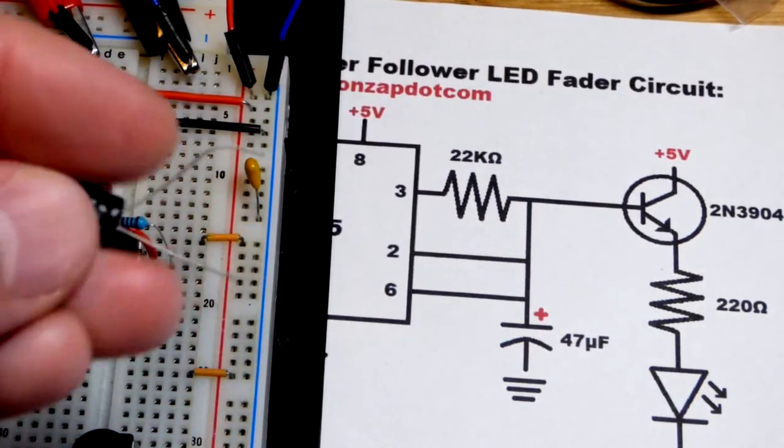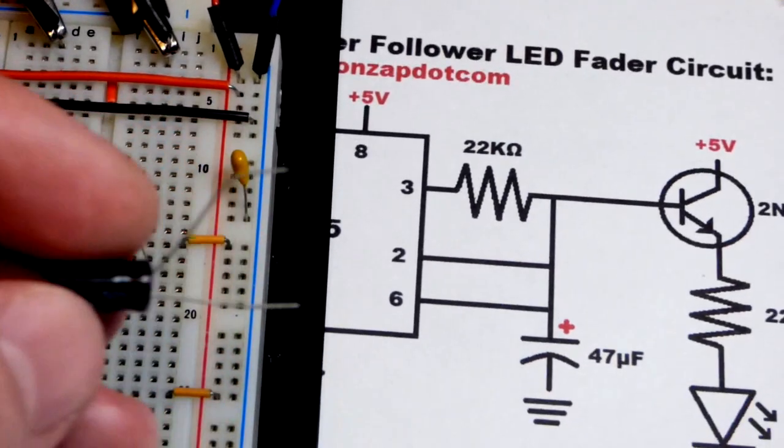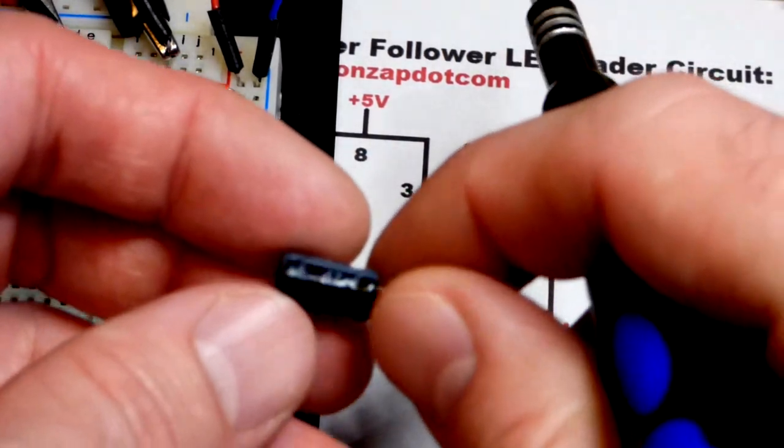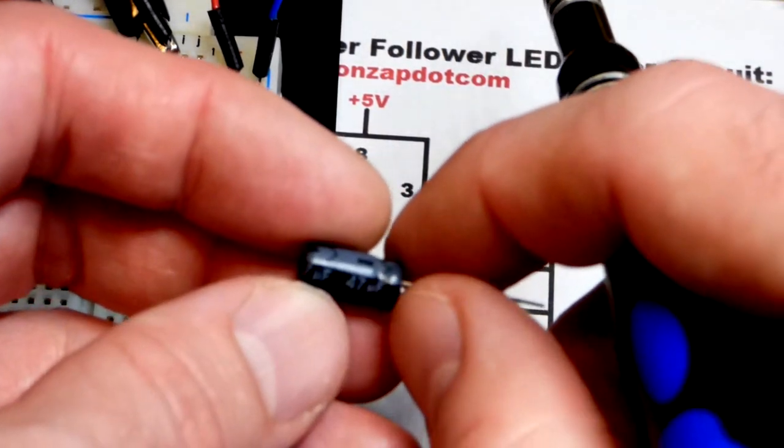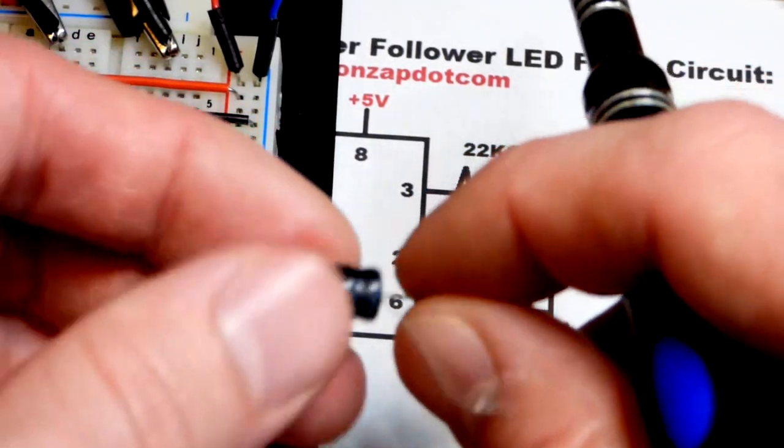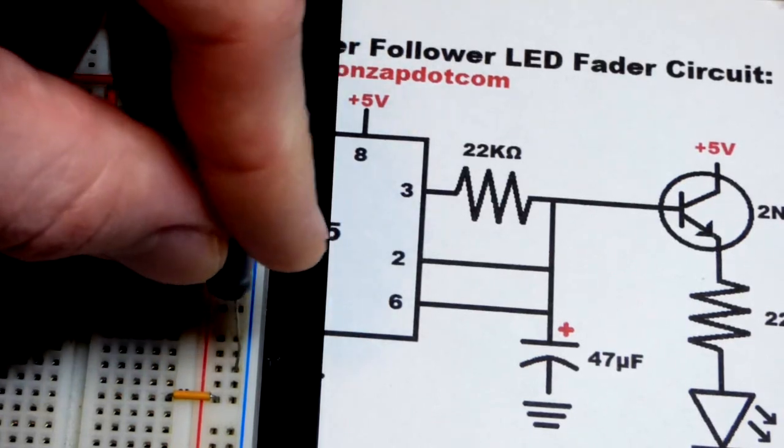We take the capacitor, so this is an electrolytic capacitor. I'm finding 47 microfarad works really well with the setup I have right now. So we got 47 microfarad there. This is the negative side of it.